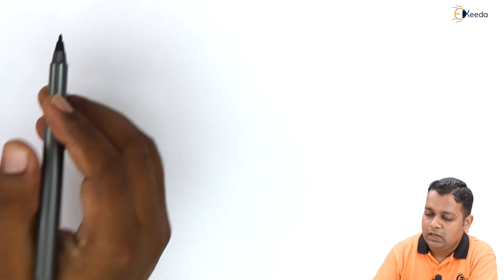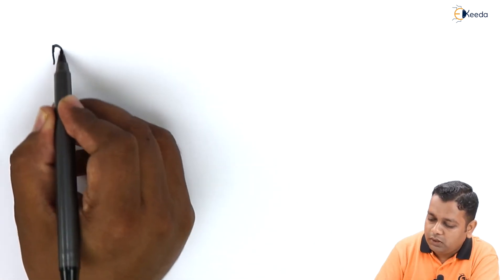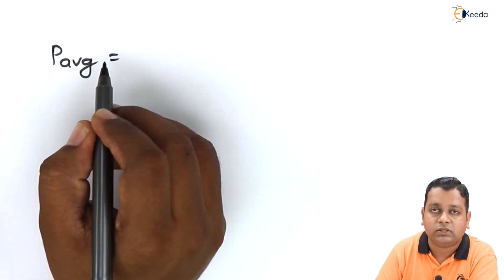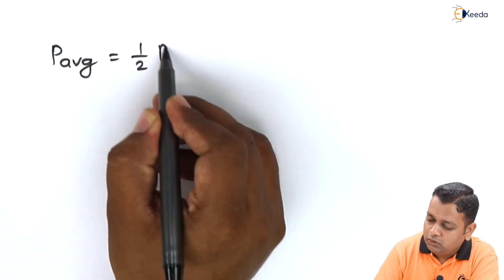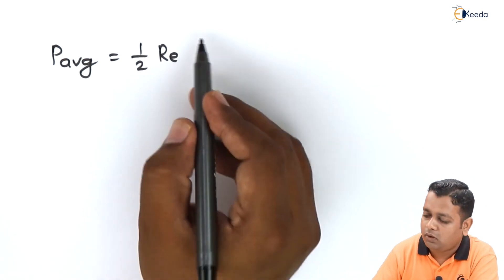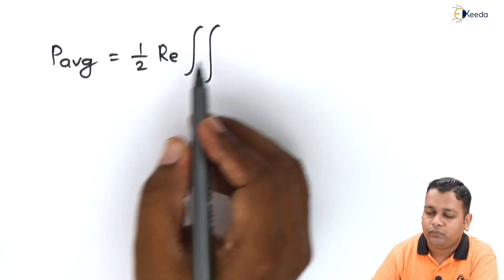In this representation, in the numerator that we have represented as P subscript avg, it can be computed as P avg equals one-half the real part obtained for the double integral that has E bar cross H bar conjugate.